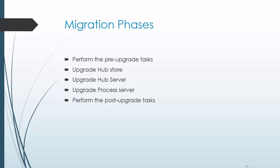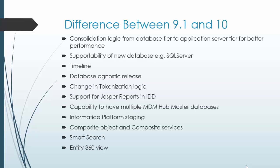These are the phases which need to be considered during the migration. The first phase is performing pre-upgrade tasks. The second phase is upgrading the hub store. The third phase is upgrading the hub server. Next is upgrading the process server, and finally performing the post-upgrade tasks. Let's start with the pre-upgrade tasks.